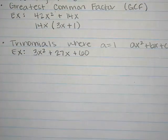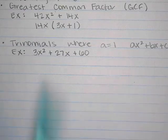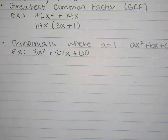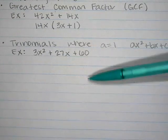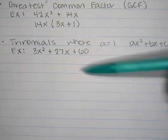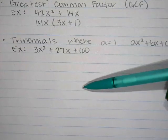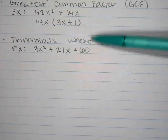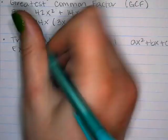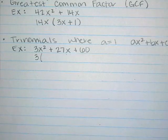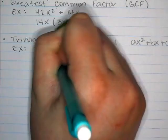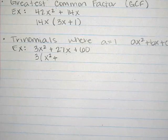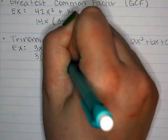The calculator trick can only look at two numbers at a time, so we can't check all three for GCF at once — but we can pick the two harder numbers. Looking at 3, 27, and 60, you can see that 3 divides into all three. So we take out a GCF of 3, leaving x squared. 27 divided by 3 is 9.